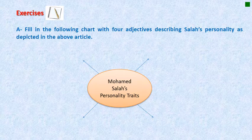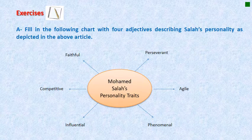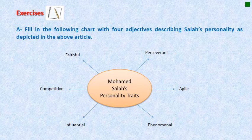Now let's go to the exercises. This is what a character sketch looks like. Fill in the following chart with four adjectives describing Salah's personality as depicted in the above article. He's faithful, perseverant, agile, fast, phenomenal — not ordinary — influential, very competitive, and humble. He's not a snob, of course.